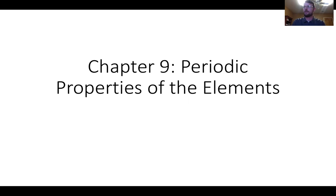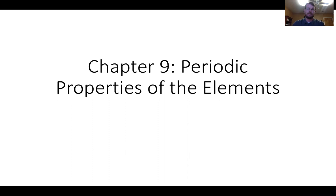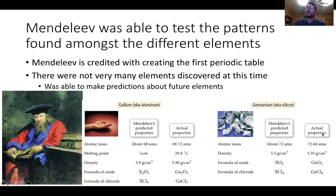Hey guys, welcome back to chapter 9's lecture on periodic properties of the elements. We're going to look at electrons from the last chapter and start applying them to elements, using those electrons and different properties to look at the periodic table. There's so much information in the periodic table that it's almost a disservice presenting it this late in the semester, because it answers a lot of questions about ionic compounds, covalent compounds, and naming things.